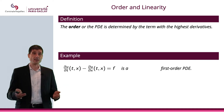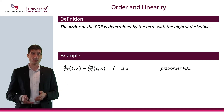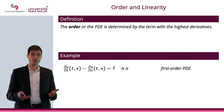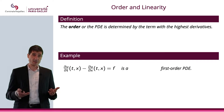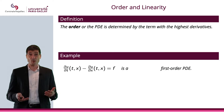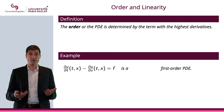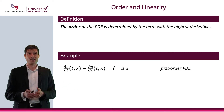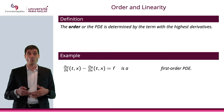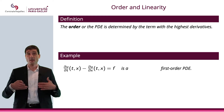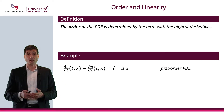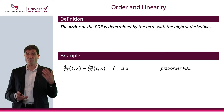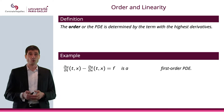If you look at this equation, for instance, du/dt minus du/dx equals f, that would be a first-order PDE because the highest derivative is one derivative in t and one derivative in x. We don't go to the second derivative — it is a first-order PDE.